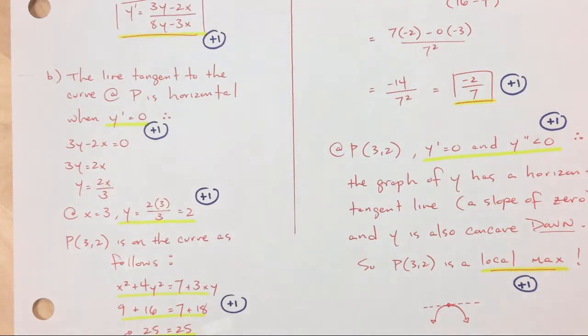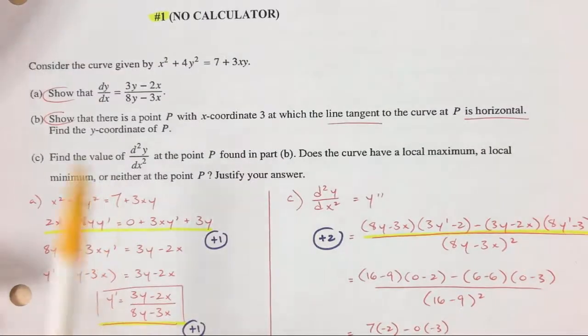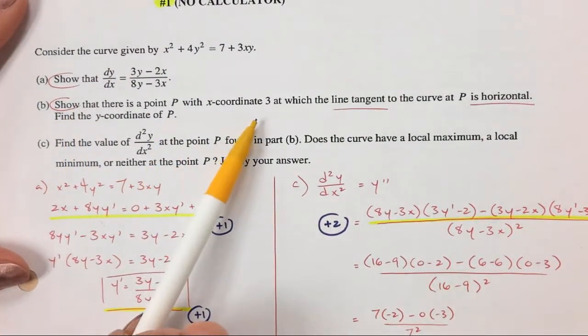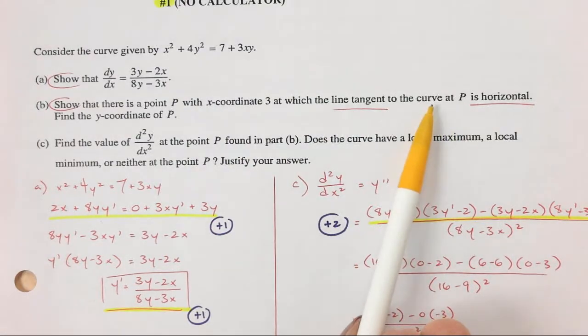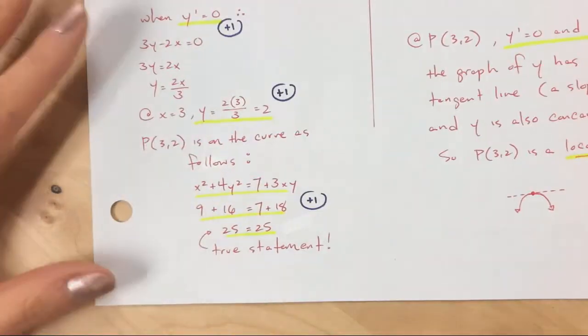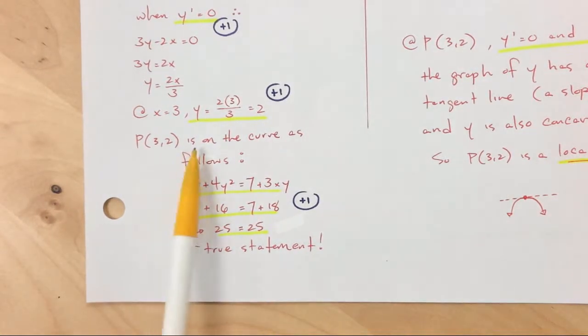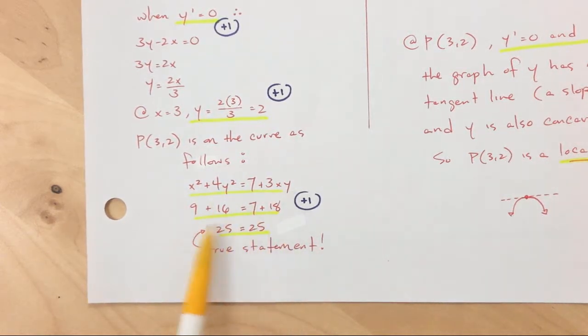Okay, show that there is a point. I'm going to make sure. This is what I found using my horizontal slope. I found y equals two. I'm going to show that there's a point P that is on the curve as well. So right here, I did that on the very bottom. So that is on the curve as follows. So what I did is I used my original equation that they gave me. This is the curve. I plugged in three comma two. And then 25 equals 25 is a true statement. So somehow you have to verify that three comma two works in the original curve.